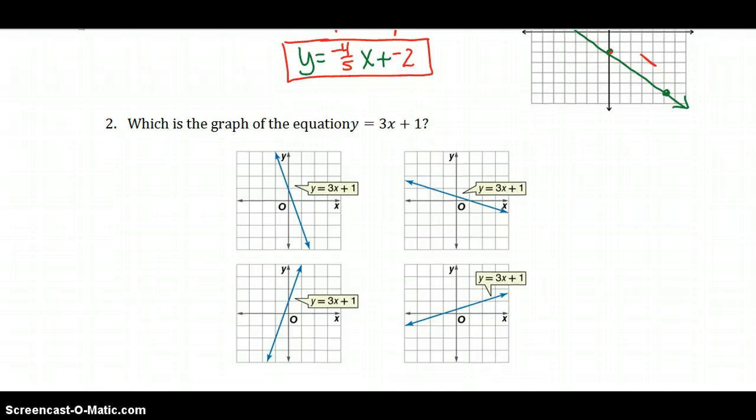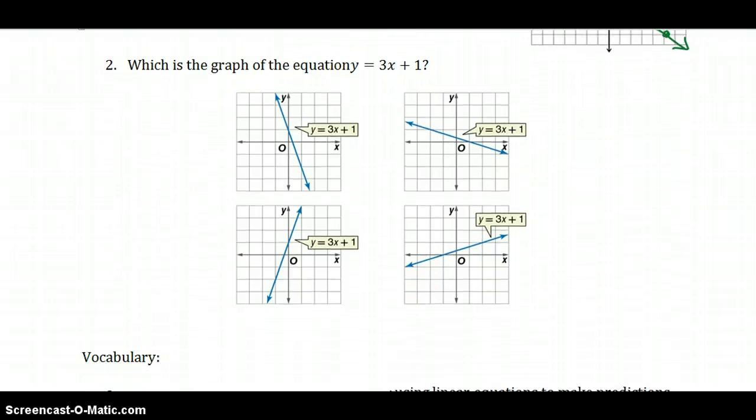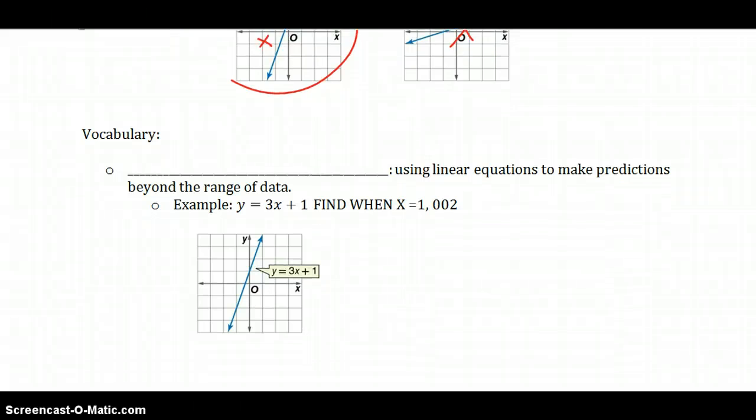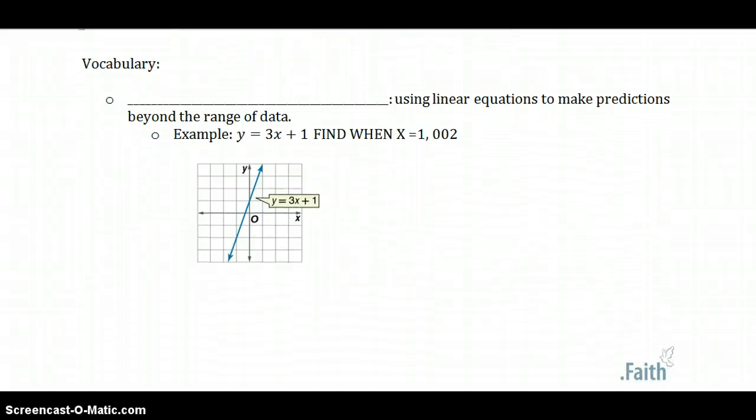Now look at these multiple choice. Which one is the answer to that question? I hope that you were able to pick this one pretty quickly because it hits the y-axis at 1, so that immediately rules out those two. So it's either this one or that one, and even without checking my slope, because I see that the line is positive, a positive slope is going uphill, so that means this has to be the correct option, even if you don't check the rise and the run to be 3 over 1.